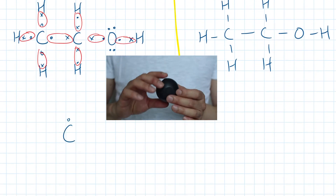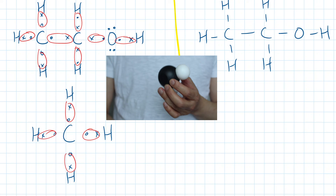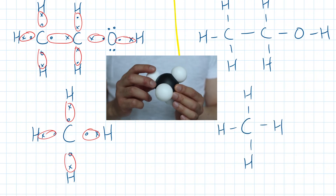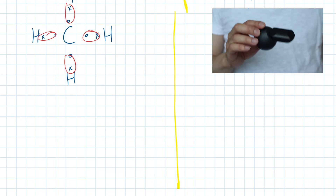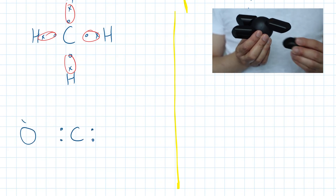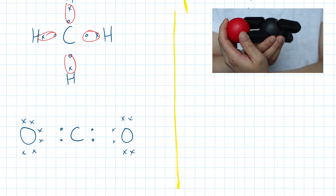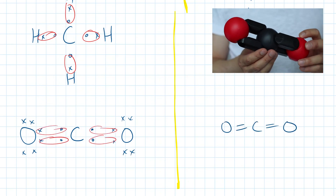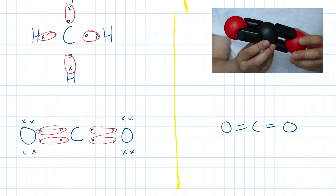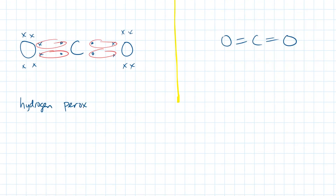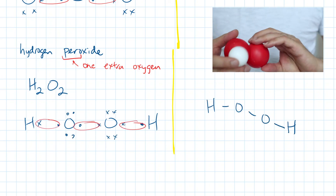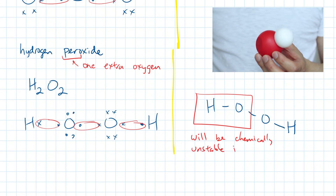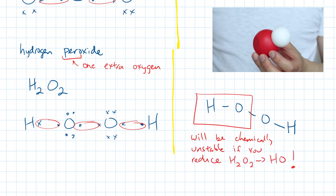Methane has one carbon in the middle, and it will borrow four electrons from the four hydrogens surrounding it. Carbon dioxide will have one carbon in the middle, and the carbon will borrow two electrons from an oxygen to its left, and will borrow two more electrons from an oxygen to its right. Although drawing Lewis structures is a senior chemistry topic, it's nice to have a basic understanding of how molecular compounds bond together. That way, you'll know why you cannot reduce ratios of certain compounds, like hydrogen peroxide.